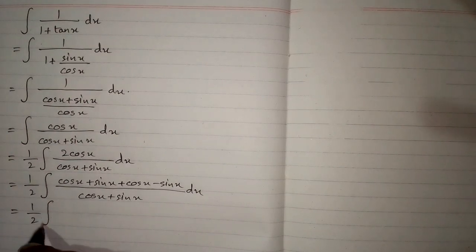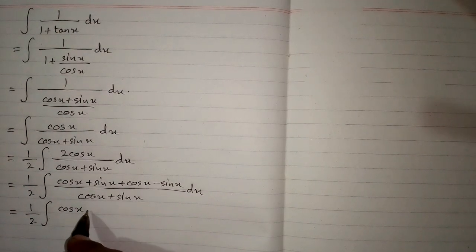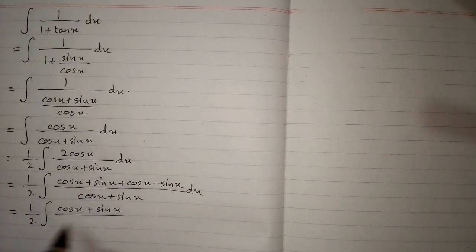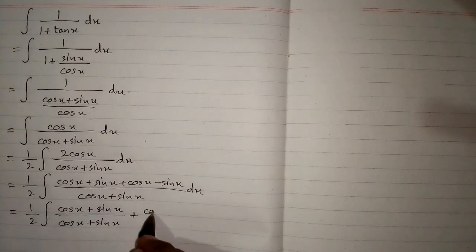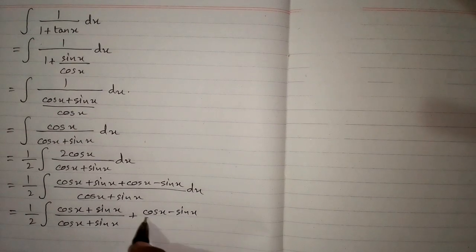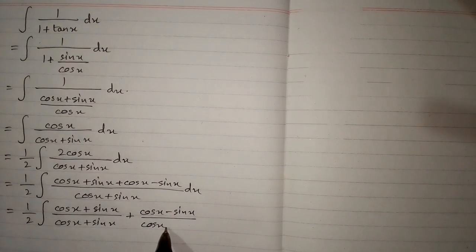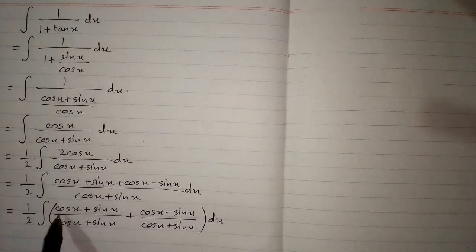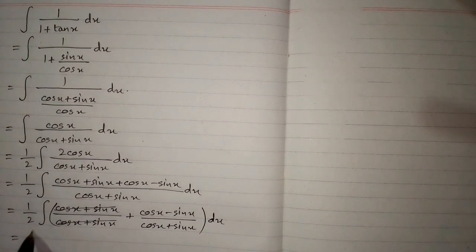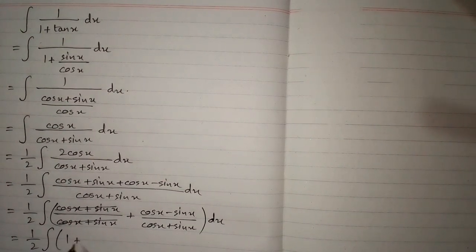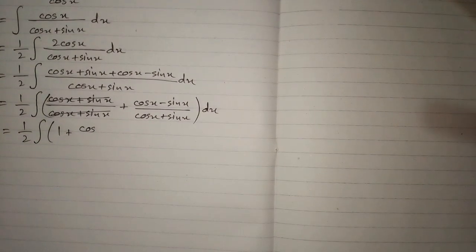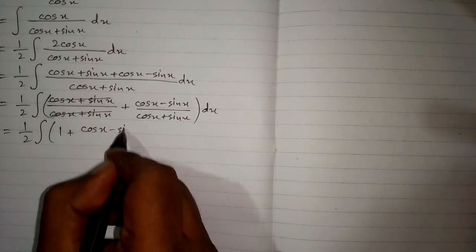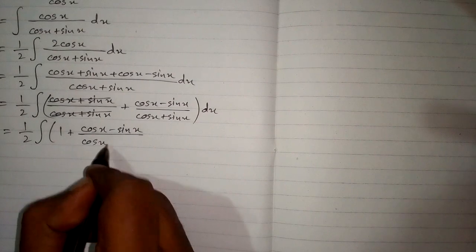Now this fraction can be written as the sum of two fractions: cos(x) plus sin(x) upon cos(x) plus sin(x), plus cos(x) minus sin(x) upon cos(x) plus sin(x). After cancellation we have half of 1 plus cos(x) minus sin(x) upon cos(x) plus sin(x).